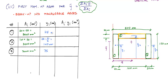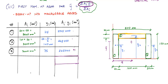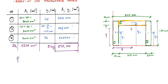We go across the table and multiply A times Y. For areas one and three: 3,000 × 75 = 225,000 mm³ each. For area two: 3,200 × 140 = 448,000 mm³. Summing this last column gives 898,000 mm³ for the sum of Ai·Yi. The sum of all areas is 9,200 mm². Plugging into y-bar equals sum of Ai·Yi over sum of Ai gives y-bar = 97.61 millimeters.